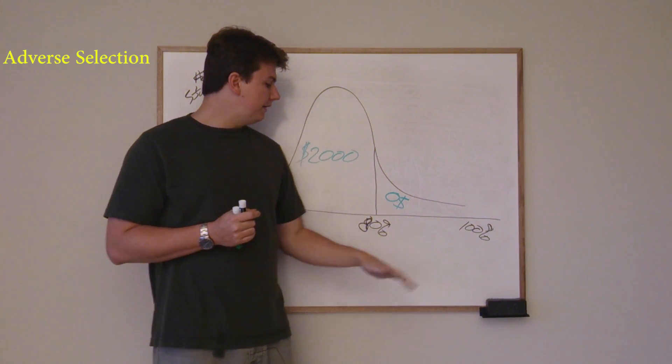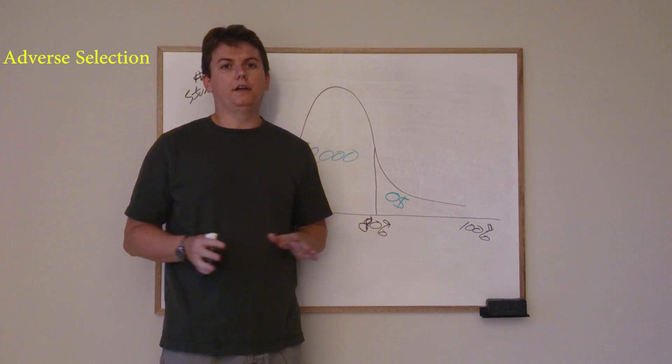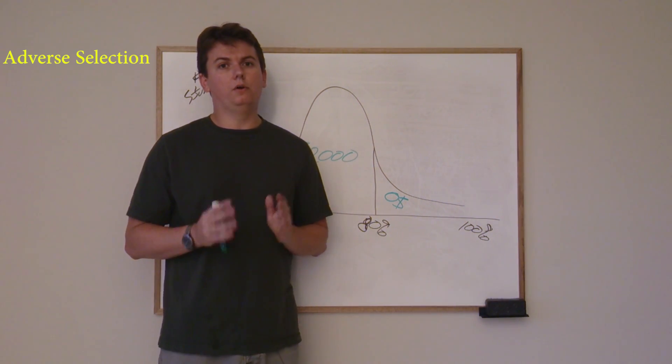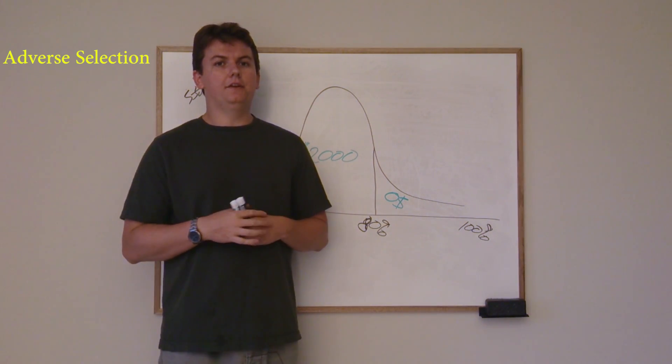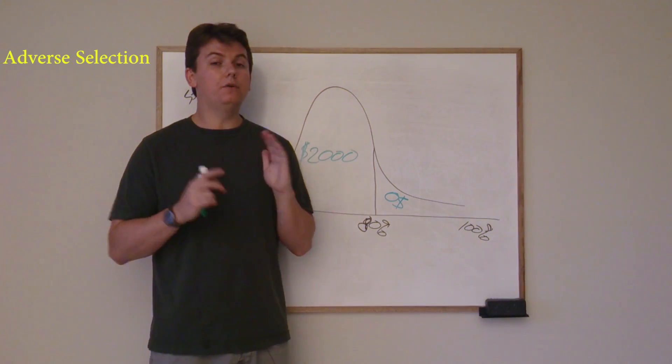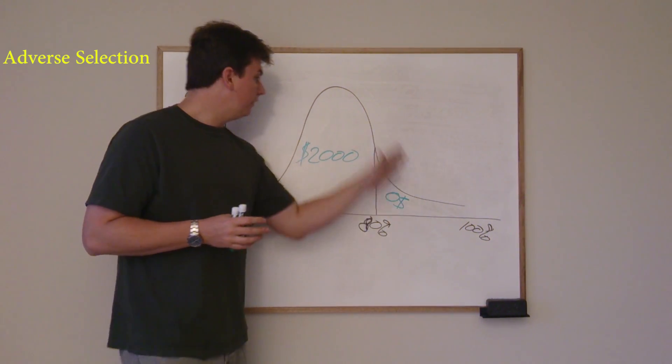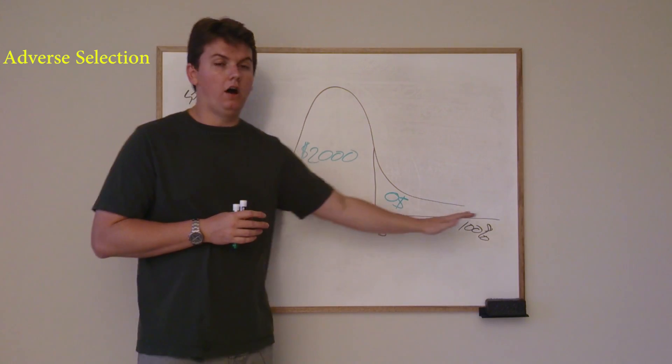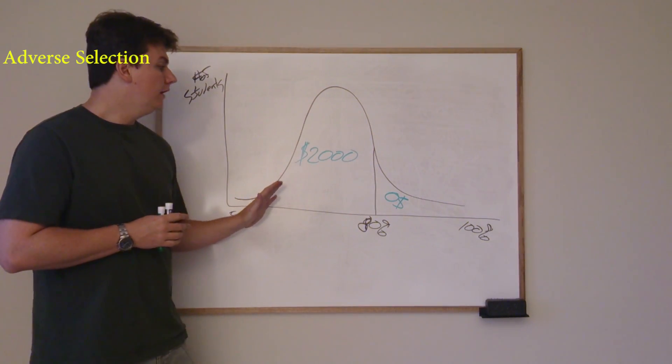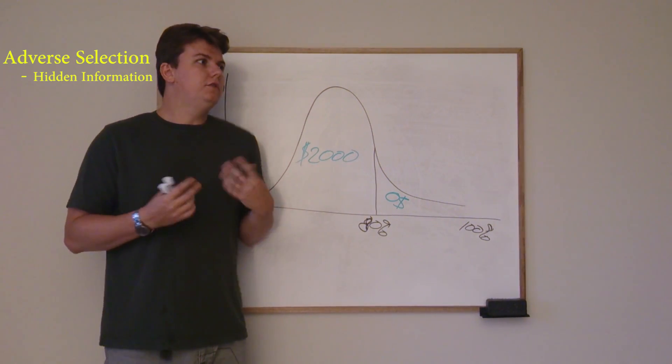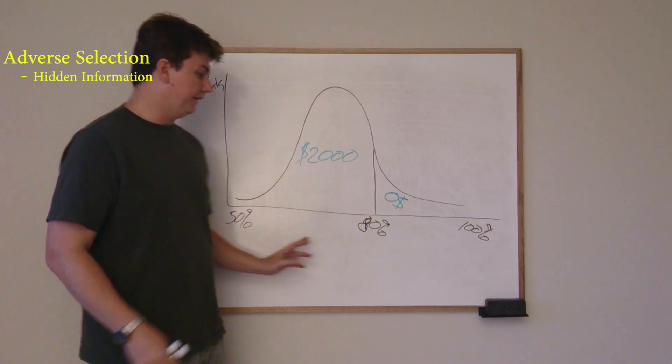So let's say we have these exact same students, but they're all perfectly honest. So what they're all going to do is they're all going to study as hard as they can, no matter what. Now, I don't know these students. So I don't know where they would normally lie on this distribution curve. But they do. They know, like you know as a student, pretty much where you're going to end up.